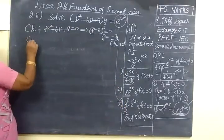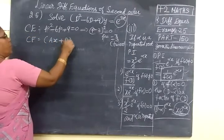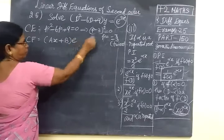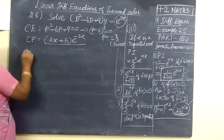So first we are writing complementary function as c₁e^(3x) + c₂xe^(3x). So complementary function over.